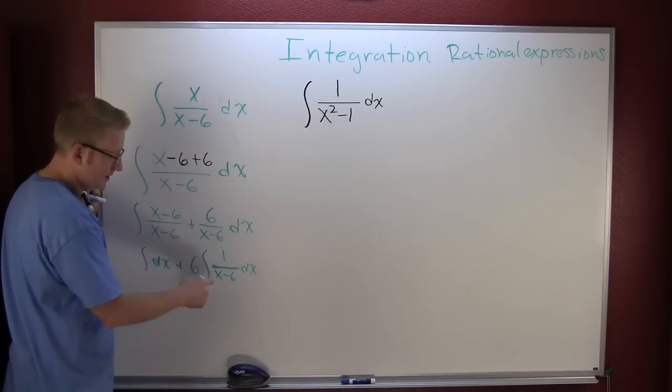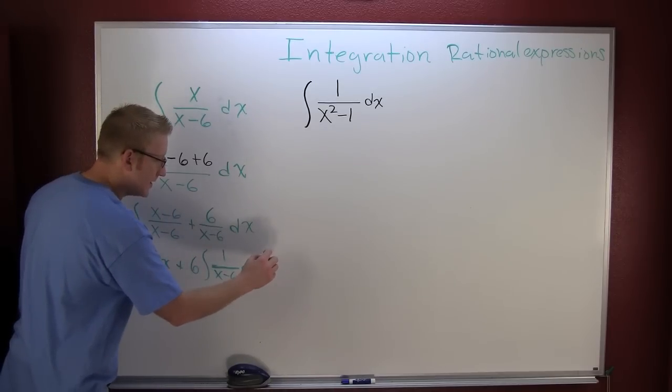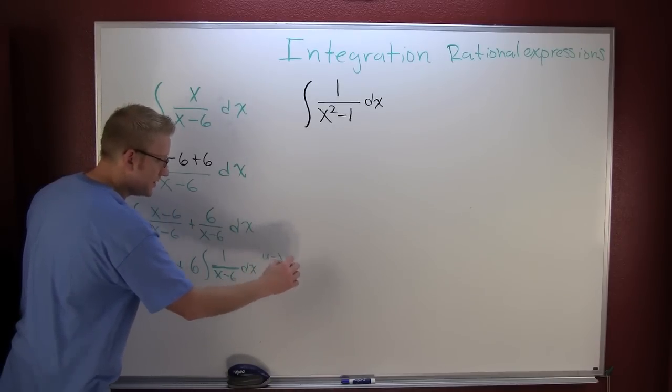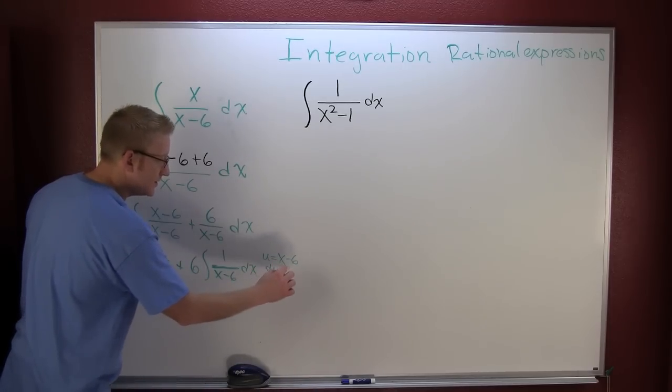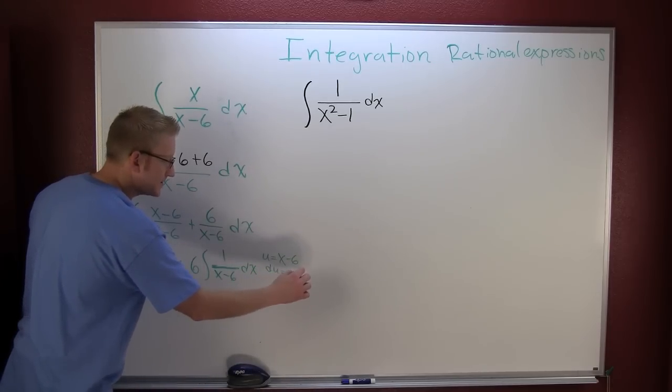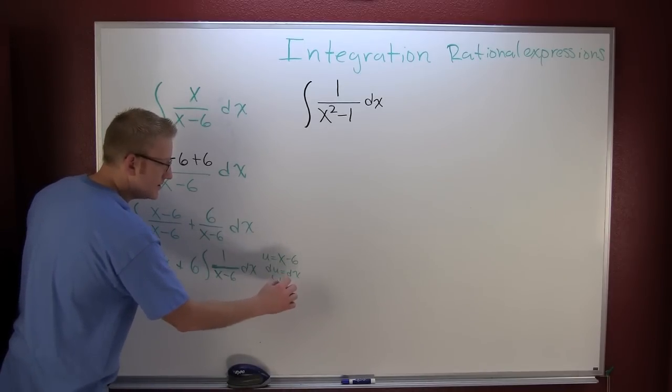Now that sounds lovely. Here, I'm going to let my denominator be u. So then here I'm going to let u equal x minus 6. In doing that, du is equal to dx.